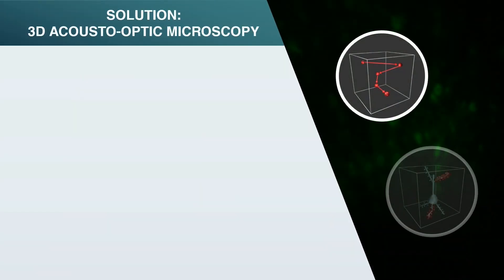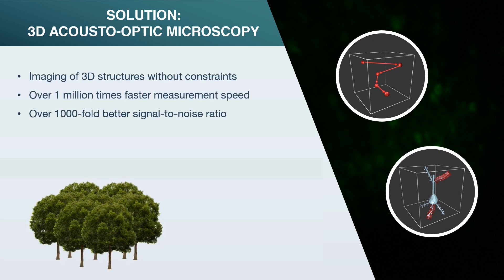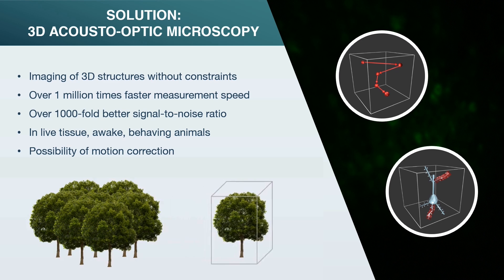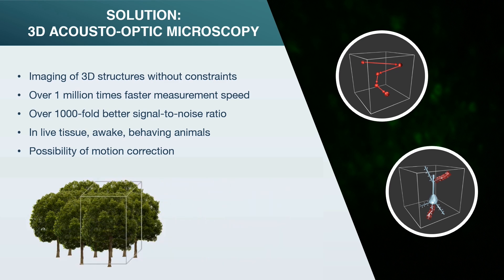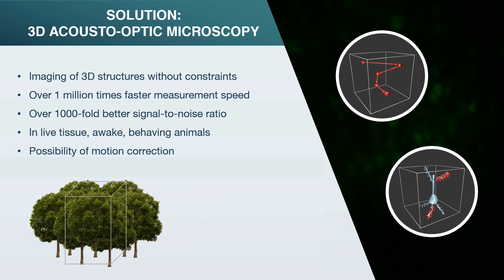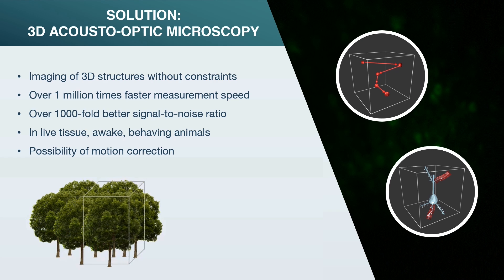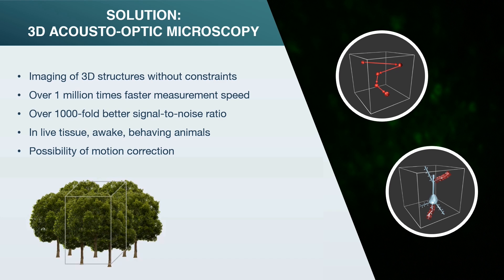The acousto-optical technology makes it possible for the microscope to jump to different points in a three-dimensional sample within microseconds. Therefore, we are able to sample different points of the neuronal network virtually simultaneously. Since our interest lies mainly in cell activity, by concentrating on active elements, we can gather the information of interest in a given volume within a few milliseconds. Recording strictly only on small regions of interest increases the signal-to-noise ratio tremendously. The technique can be used in awake behaving animals, and the fast imaging rate can be converted into high-quality motion correction.